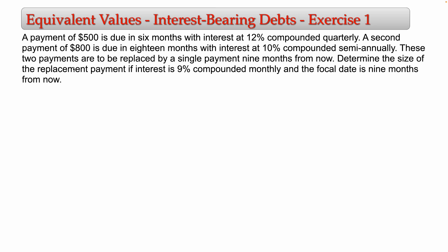These two payments are to be replaced by a single payment nine months from now. Determine the size of the replacement payment — its interest is 9% compounded monthly, and the focal date is nine months from now. Any time you have a problem with interest-bearing debts, the first step is to find the value you are actually going to pay: the maturity value of each debt.